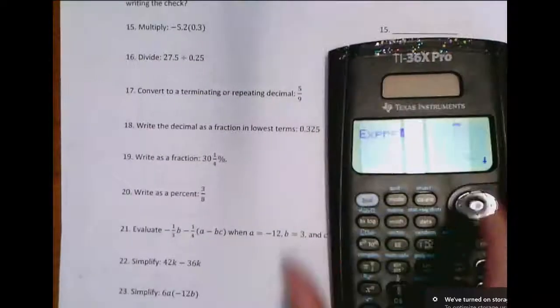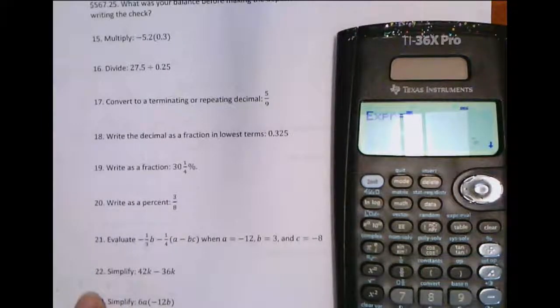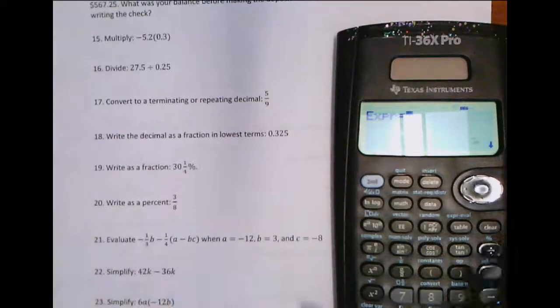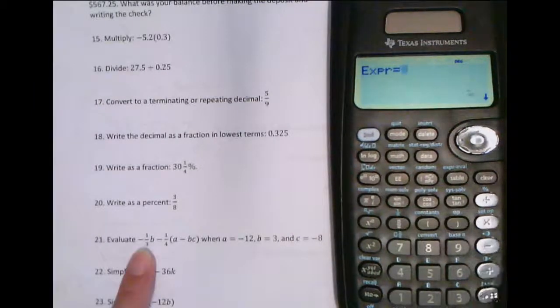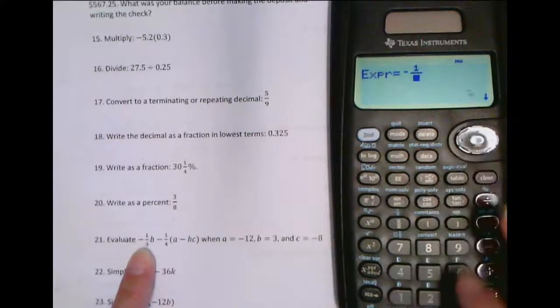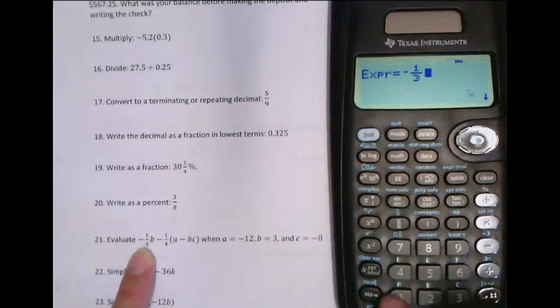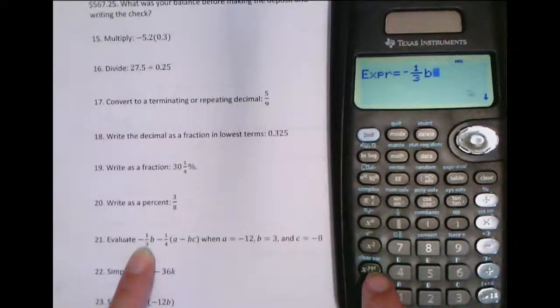So I'm going to bring up a question that we had on our diagnostic number 21 here. We had to evaluate this expression that had a, b, and c for those three different values. So I'm going to type this thing in. I need a negative one-third. You press the variable button more than once. It'll bring up different variables. So x, y, z, t, a, b. You can see all the letters it has available right here. It goes up to d.